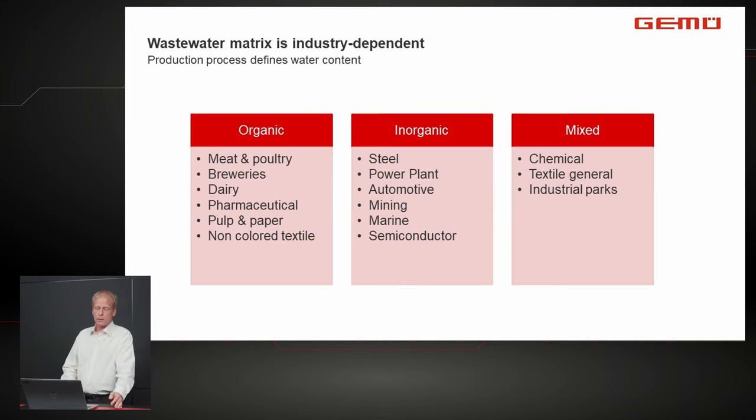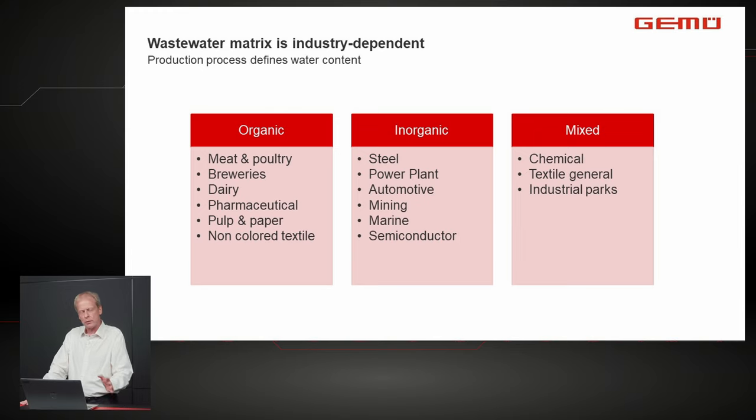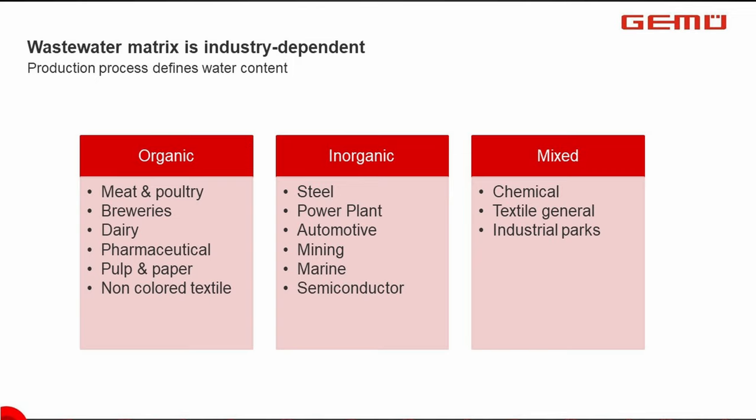All processes ultimately produce wastewater with different content depending on the industry. Organically polluted water is common in food and beverage, pharmaceutical, and pulp and paper industries. Inorganic load is mainly found in steel production, power plants, mining, marine, and semiconductor industries. Mixed content — the most complicated to treat — appears in chemical and textile industries and industrial parks where all wastewater types are combined.